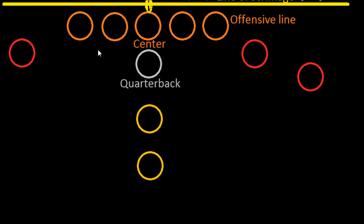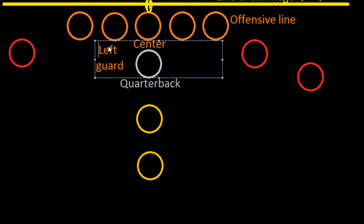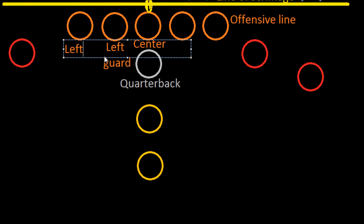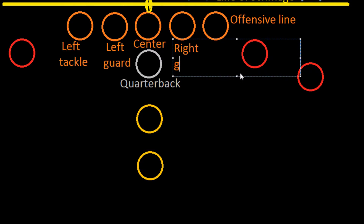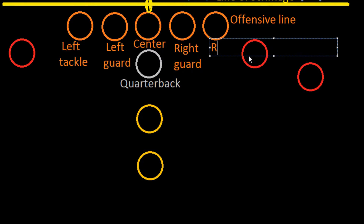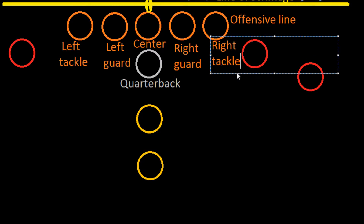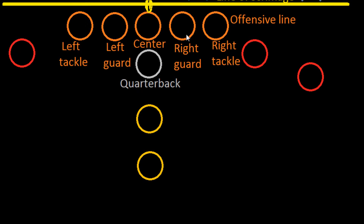On either side of the center, we have our other offensive linemen. On the left side, we have our left guard, who stands right beside the center to his left, and then we have the left tackle. To the right of the center, we have our right guard, and on the outside, we have our right tackle. These offensive linemen's job is to prevent the defense from getting to the quarterback, who will have the ball. These offensive linemen are usually big guys whose job is to stop the defense from getting to the ball and to the quarterback.